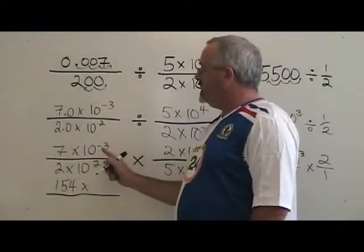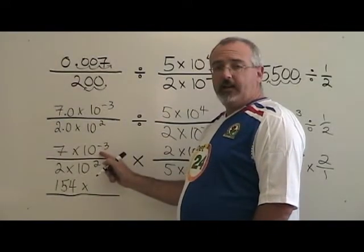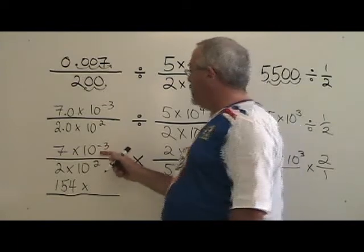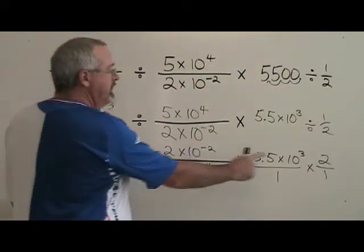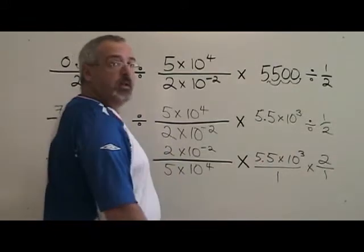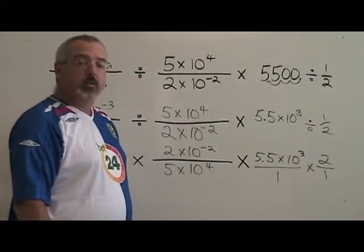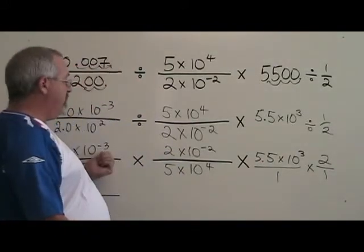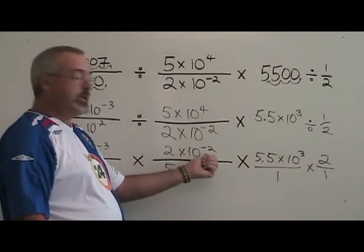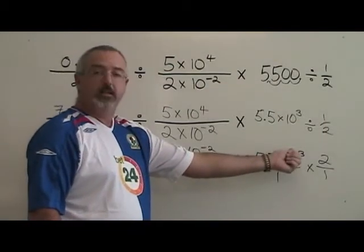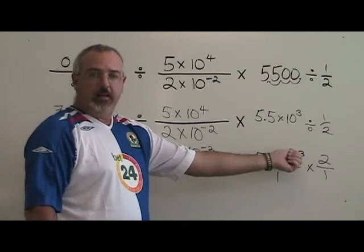Now we're going to work with the powers of 10 in our numerator. We have 10 to the negative 3 times 10 to the negative 2 times 10 cubed. What we're doing is we're adding the exponents because we're multiplying. So, negative 3 plus negative 2 is negative 5 plus 3 is negative 2. We end up with 10 to the negative 2.